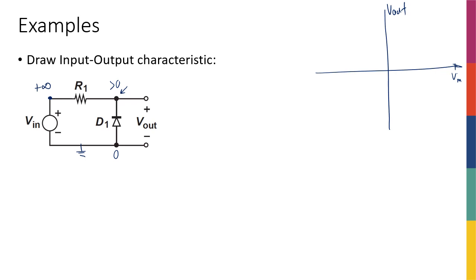So I'm going to start from positive infinity. When I start from positive infinity, I see that my diode is off. When my diode is off, it means I have just this voltage source and this resistor — there's no current, no loop. Therefore, there's no voltage across the resistor, so this node and this node have the same voltage. Therefore, V_in is equal to V_out.